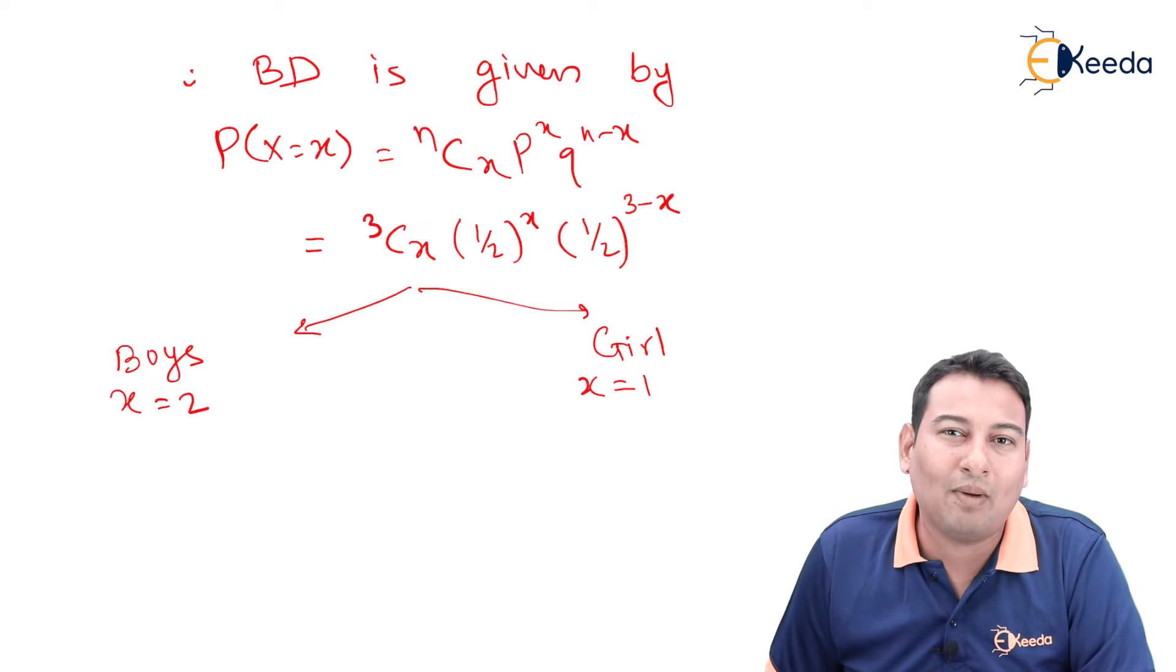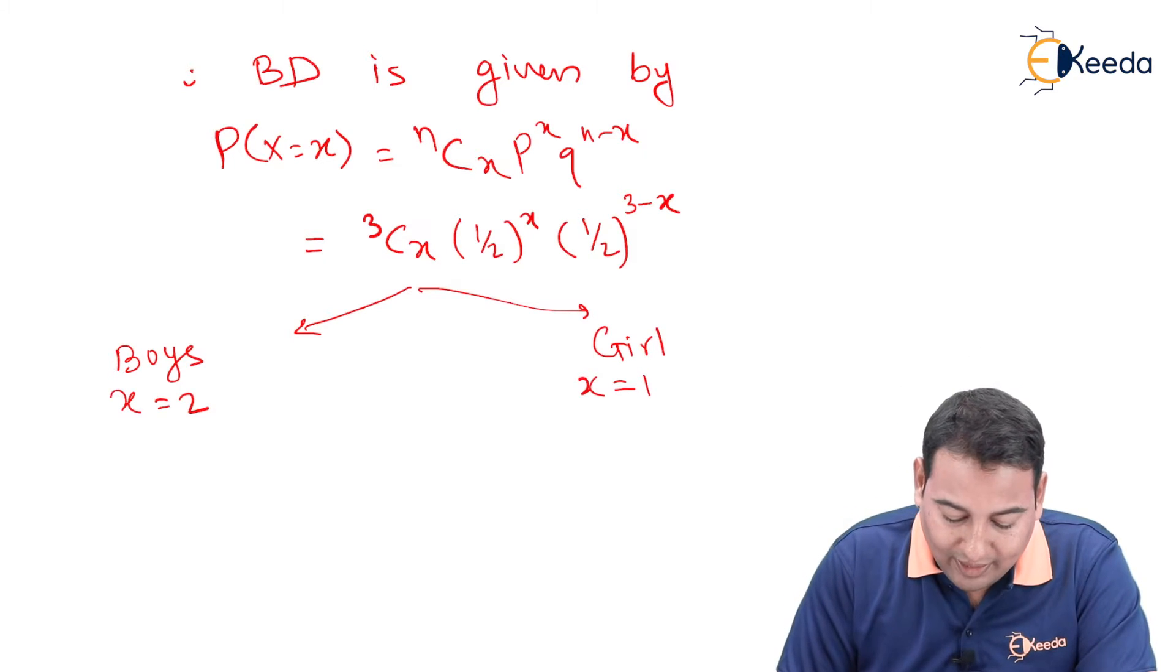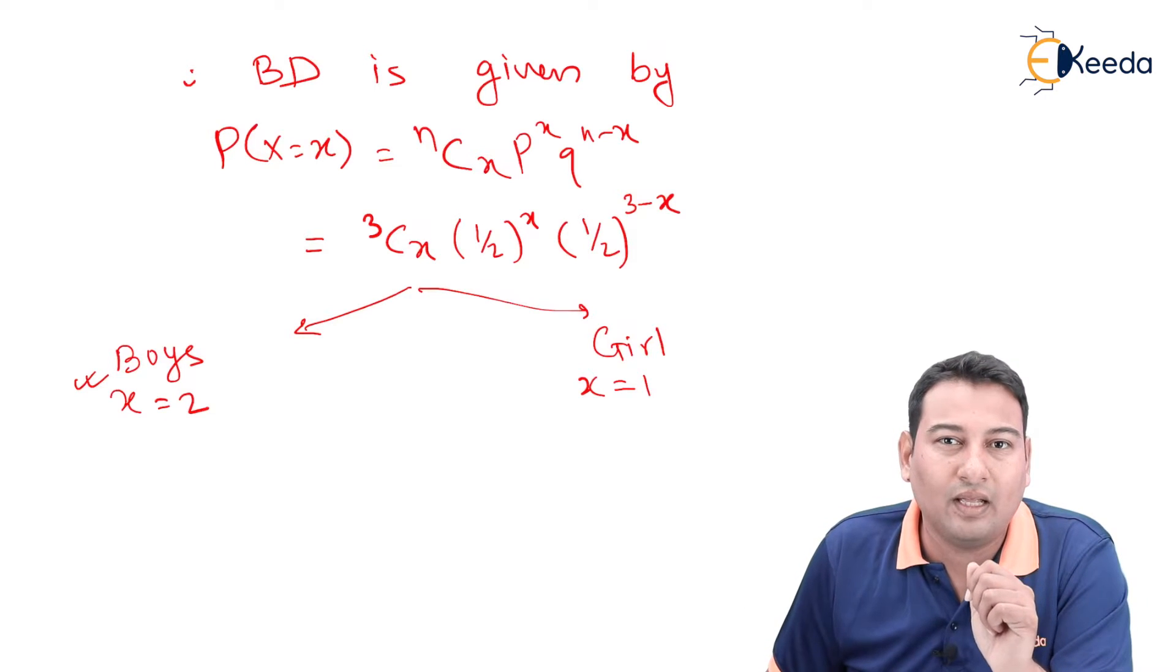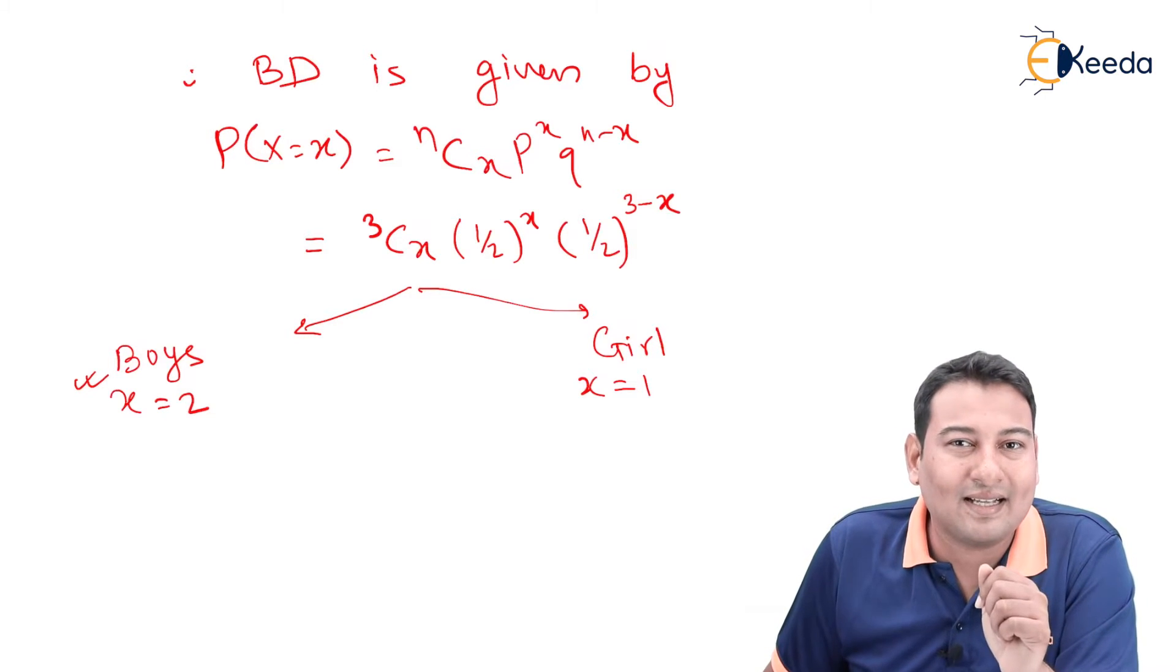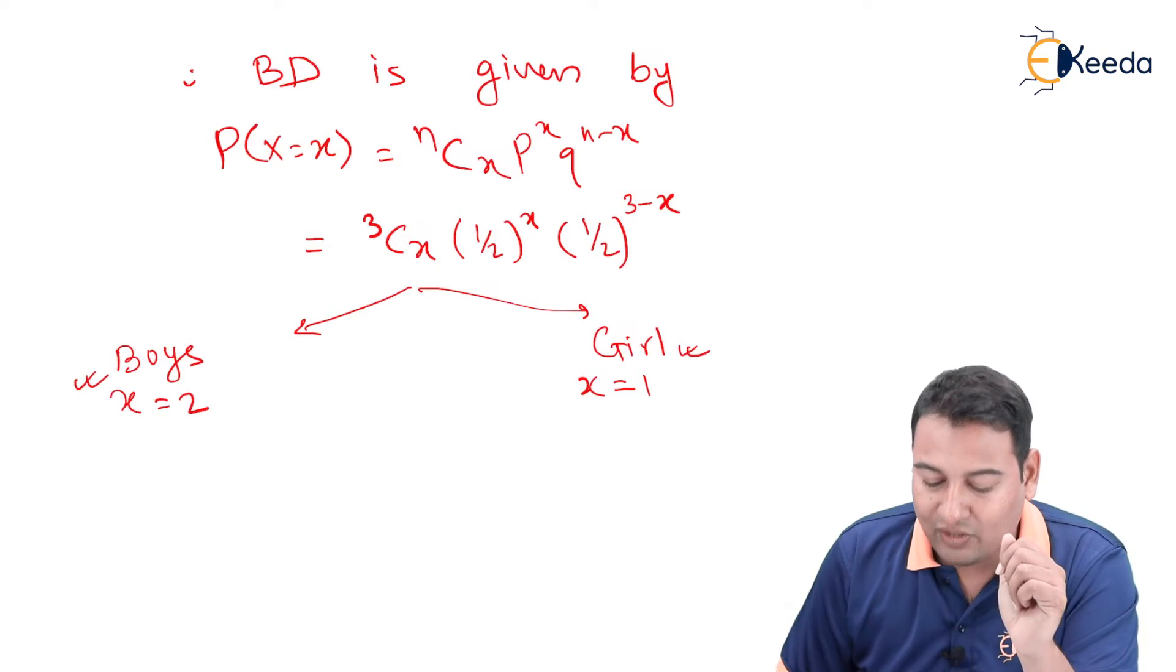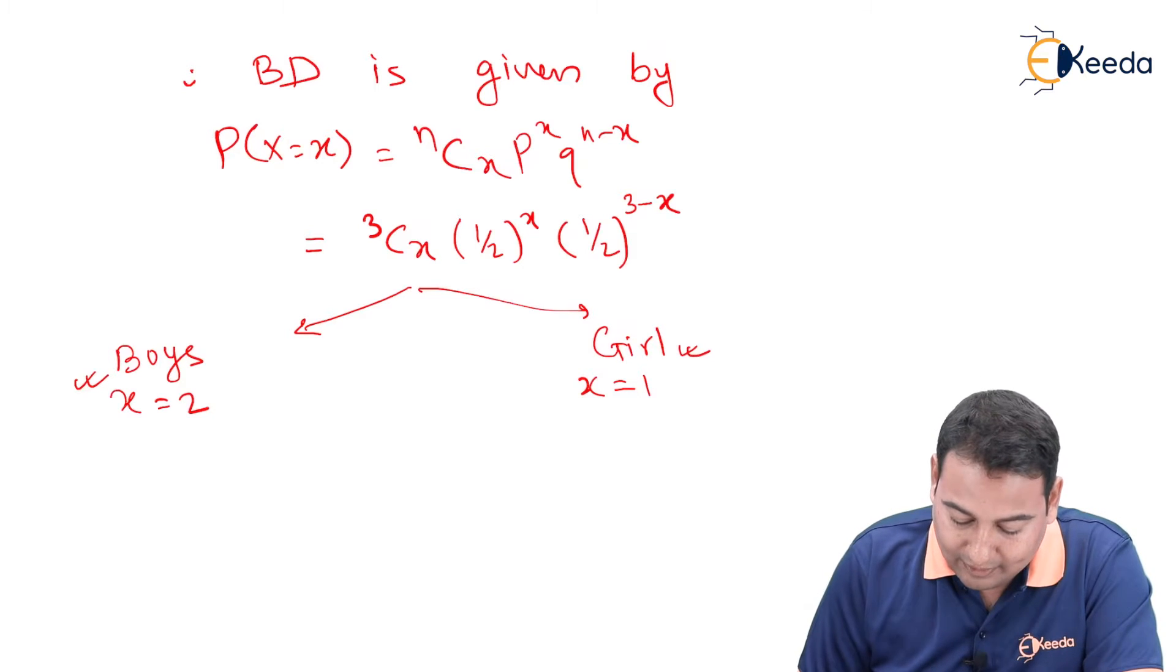So if you consider boy as probability of success, then you need to take x is equal to 2 because that is related to boy. And if you consider girl as success, that is P is based on girl, then you need to consider x equal to 1. So let us solve these two cases.